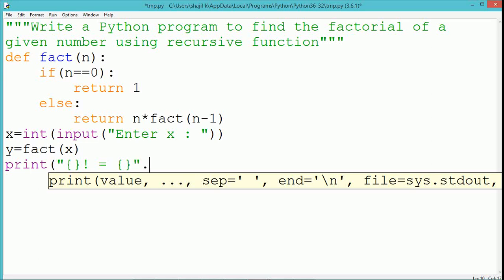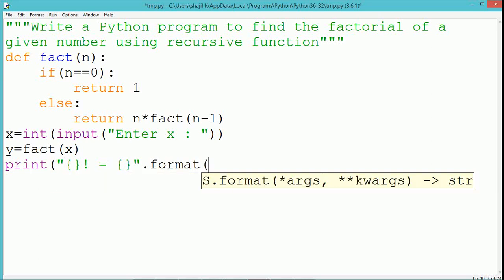The fact method is called by passing the value x and the outcome of the fact method, which will be the factorial of x, will get stored into the variable y.